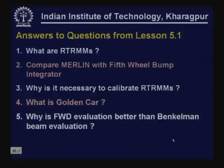The golden car is a hypothetical quarter-car model whose parameters — body mass, axle mass, suspension stiffness, and tire stiffness — are fine-tuned so that the IRI value computed from its simulated response to a road profile correlates well with response type measurements. This fine-tuned system is called the golden car. FWD evaluation is better than Benkelman beam evaluation because FWD provides information about the full deflection bowl — multiple deflection values — whereas Benkelman beam gives only the maximum deflection at one point.